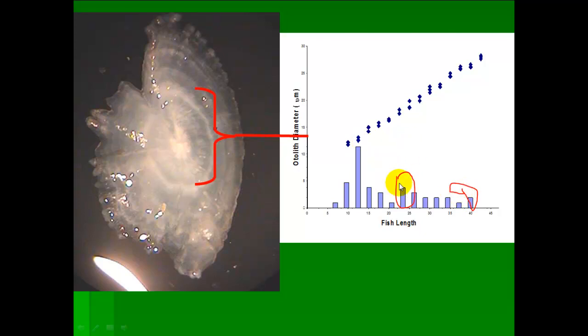But of course, as you know with length frequency histograms and aging fish that way, there's a lot of assumptions involved, and the older the fish get, the much more difficult it is to pick out individual year classes. That's why this is only used for the first annulus.